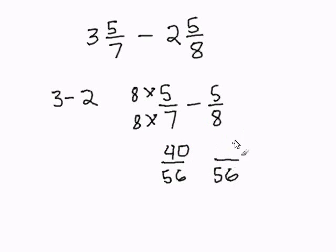8 goes into 56 7 times, so I multiply the denominator by 7 and the numerator by 7. 5 times 7 is 35.